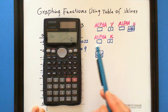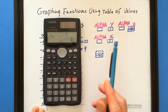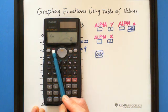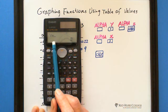then CALC. Alpha CALC. So you can see. Alpha CALC. It shows you the equal sign.